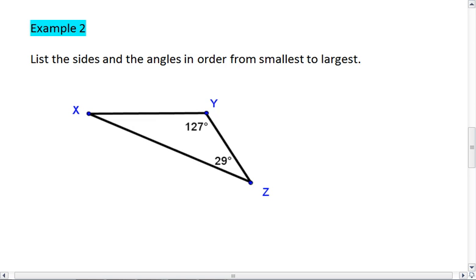In example 2, again you're given a triangle, and I want you to list the sides and the angles in order from smallest to largest. Take a moment, work on this one yourself. When you're ready, resume the video and check your solution.